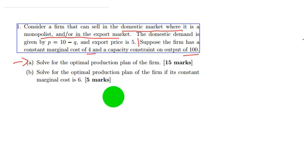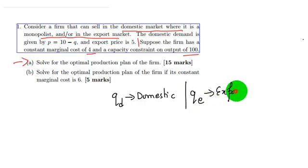Let us assume that the domestic quantity sold is qd, that is qd is domestic, and qe is export quantity.